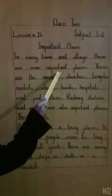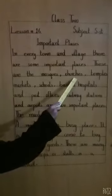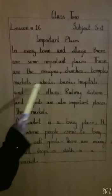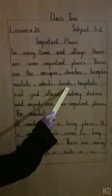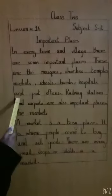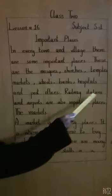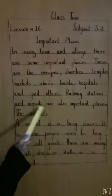In every town and village there are some important places. These are the mosques, church, temples, markets, schools, banks, hospitals, and post offices. Railway stations and airports are also important places.